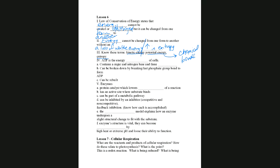ATP, or adenosine triphosphate, is the energy currency of cells — this is how cells get work done. A cell wants to move a molecule via active transport, it expends ATP. A cell wants to produce something, it expends ATP. Without ATP, a cell doesn't have the energy it needs to function, and therefore it dies.